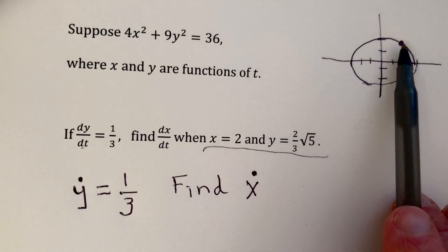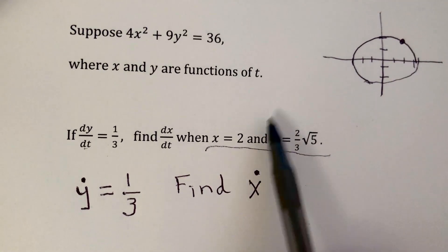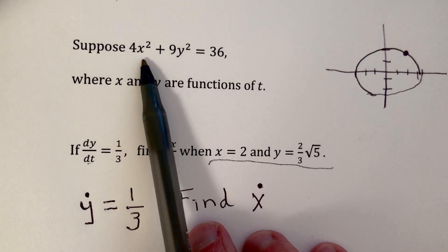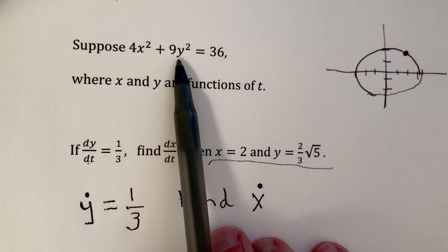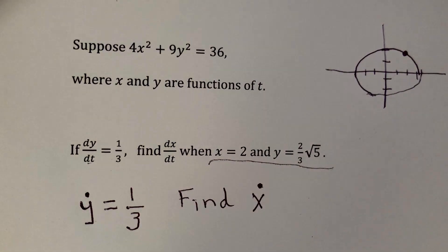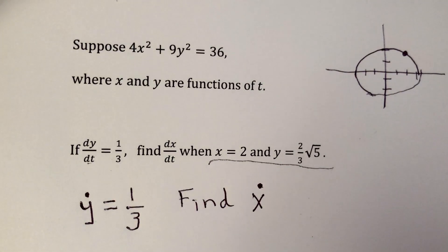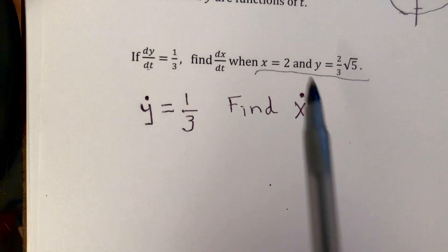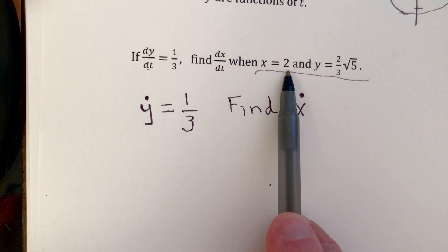So x is 2 and y is 2 thirds times the square root of 5. So what you can do is, if x is equal to 2, plug in x is equal to 2, solve this equation for y. There will be two values. We want the positive value because we're in the first quadrant. That's where the 2 thirds times the square root of 5 comes from. So we want to find x dot at this instant.